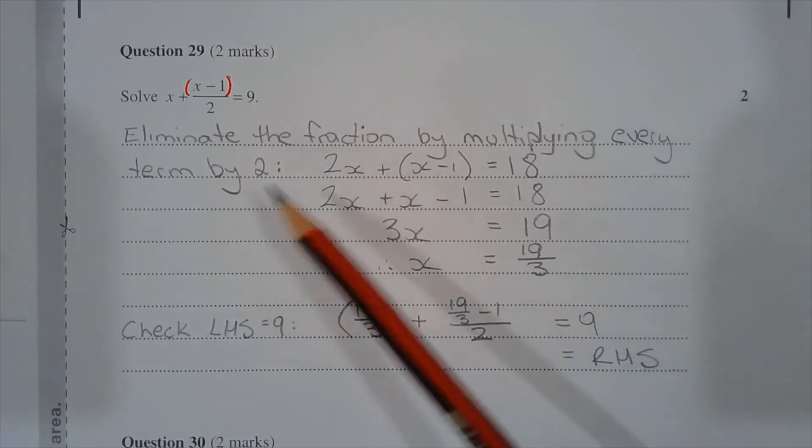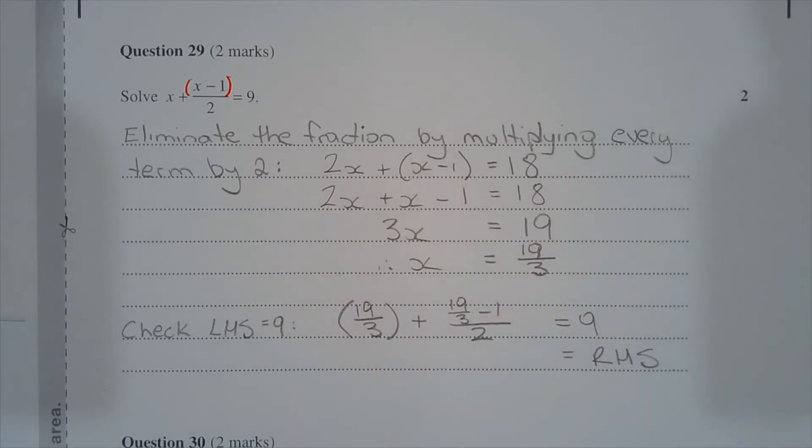The first step is to eliminate the fraction by multiplying every term by 2. It helps to enclose the numerator in its own set of brackets.